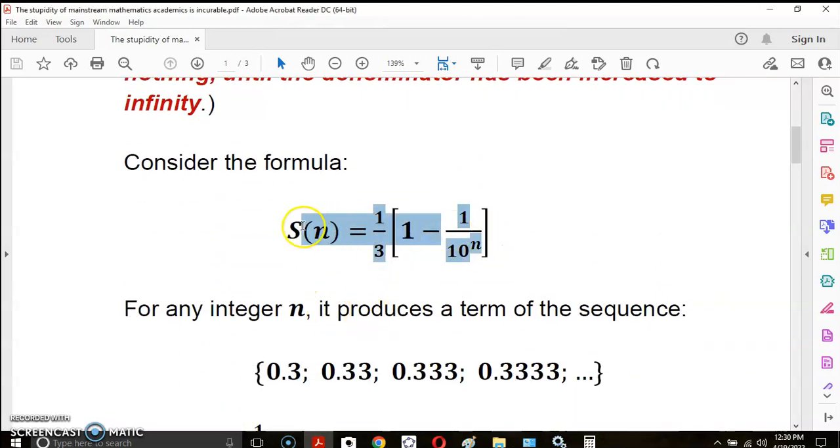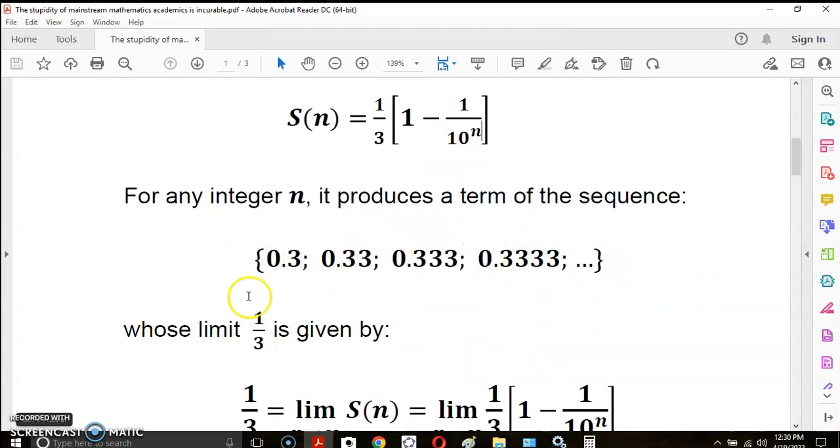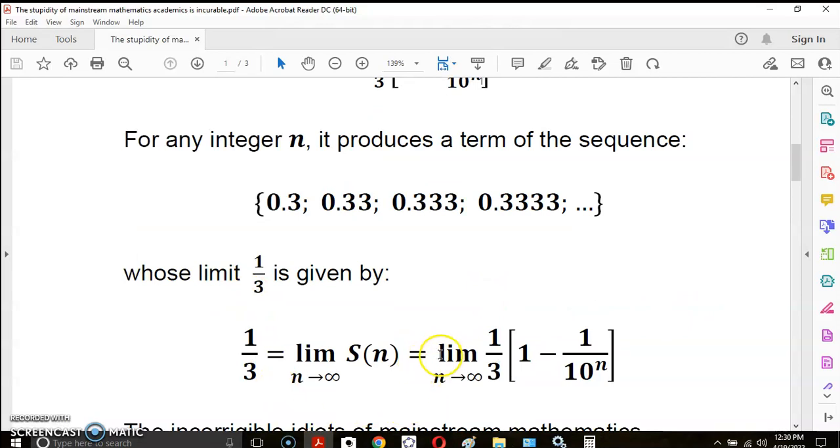Consider this formula here. This formula produces for any integer value of n a term of the sequence that you see in front of you: 0.3, 0.33, etc., whose limit is given by taking the limit of this formula. So we say analytically that if this n becomes infinitely large this becomes closer and closer to 0 so that this approaches the limit of 1/3.